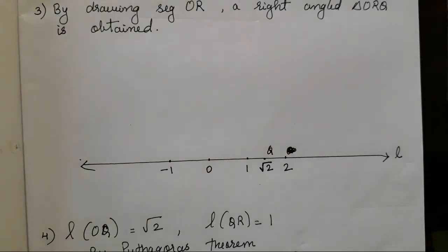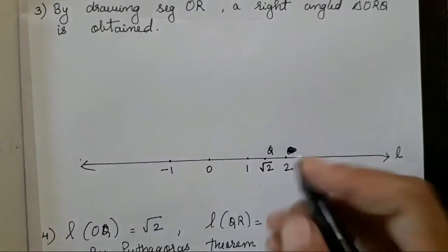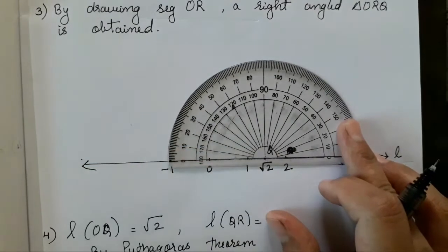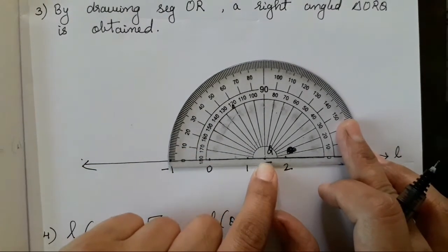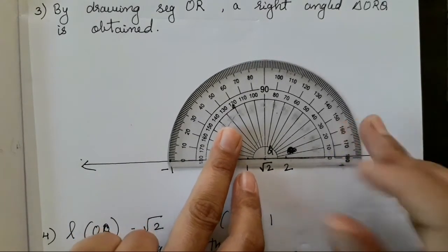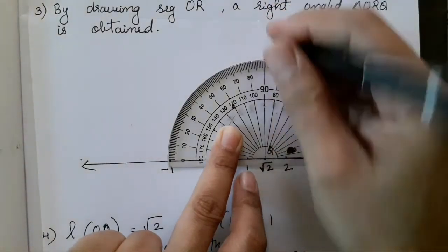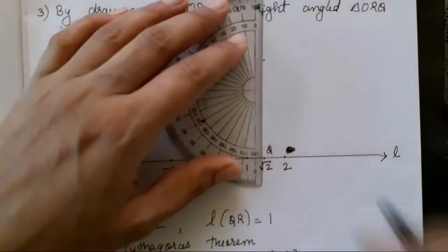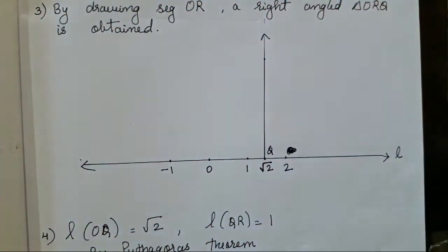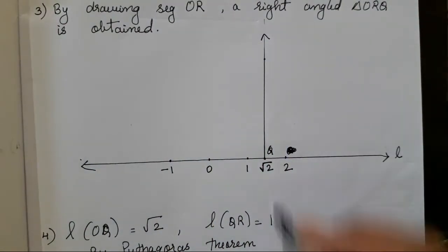How are we going to find it? First, we will draw a perpendicular to the point Q. Perpendicular to the point Q means you all have to use a protractor — place the point of your protractor on the point Q. Mark your 90 degrees. In this way, draw a ray. Now this perpendicular being drawn is 90 degrees.